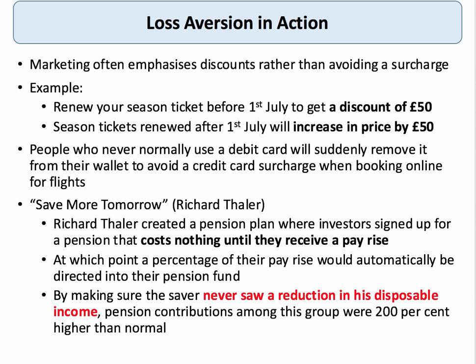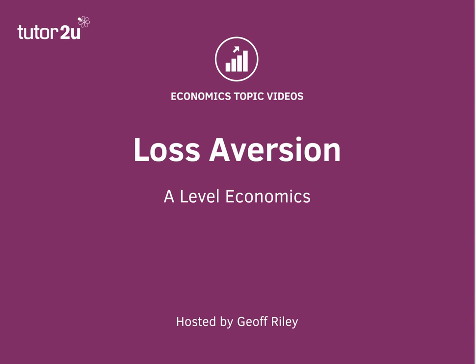A great example of using loss aversion positively is the Save More Tomorrow scheme, invented by Richard Thaler — a pension scheme for savers in America. Investors signed up for an occupational pension that cost them nothing until they received a pay rise. At that point, a small percentage of their pay rise was automatically directed into their pension fund, ensuring the saver never saw an actual reduction in disposable income. As a result of this behavioral nudge, pension contributions among the Save More Tomorrow group were 200% higher than normal.